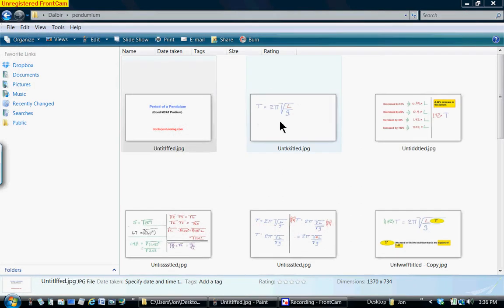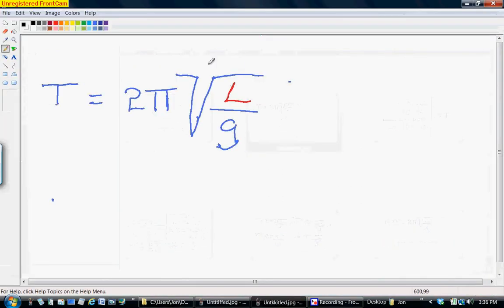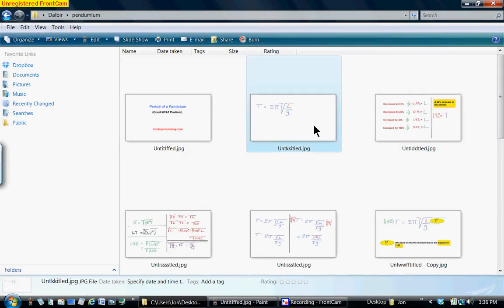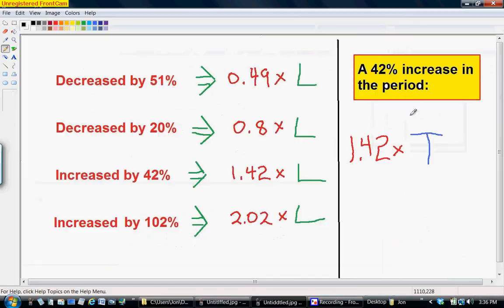First thing I want you to notice is just in the equation for a period of a pendulum that everything is constant except for the length. So the period is essentially a function of length and that's it, at least on the surface of the earth where G is constant. So now let's do a little math review. Let's look at the way we would write the wording decrease by 51 percent as it would affect L.